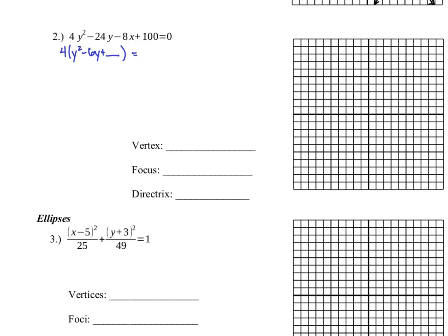I'll move the other terms — the X and constant 100 — to the other side of the equation to set up that 'something squared equals some unsquared quantity' structure, which is standard form. To complete the square, I take that negative six on Y, divide it by two, and square it — giving a plus nine. I've added this inside a quantity multiplied by four, so four times nine, which is 36, must be added to the other side to keep balance. We are now at four times the quantity (Y minus 3) squared, and on the right-hand side we've got 8X minus 64.